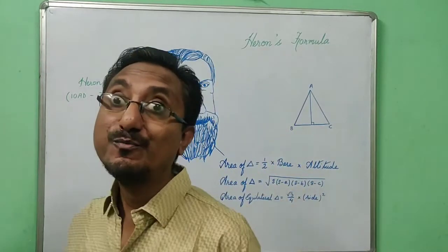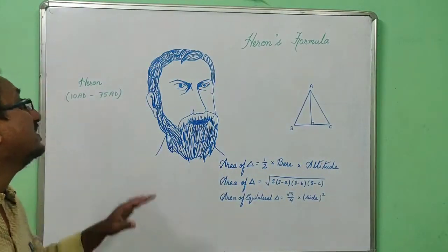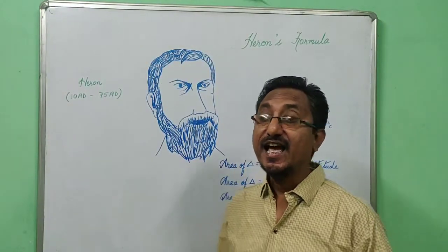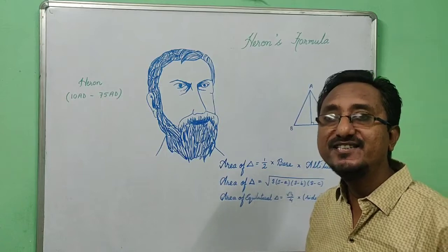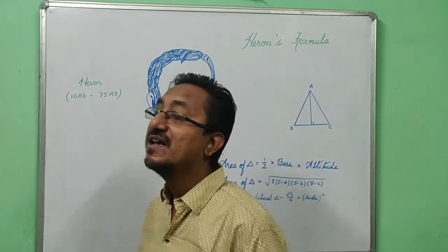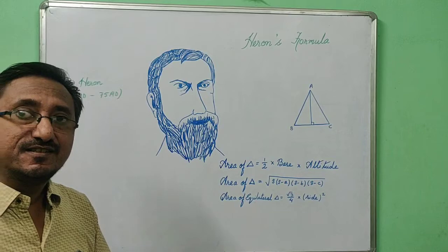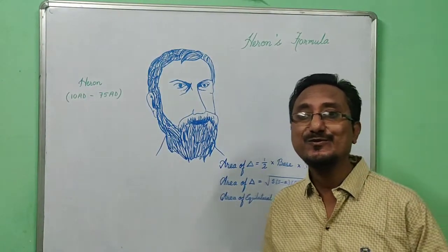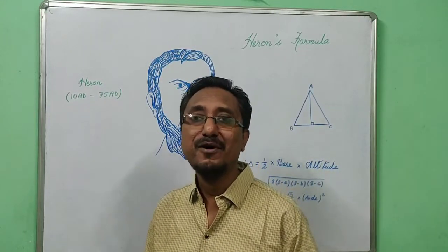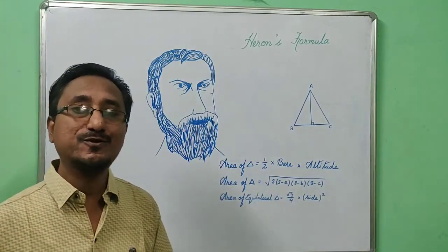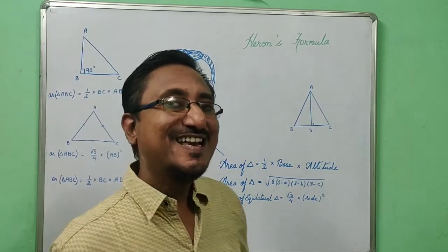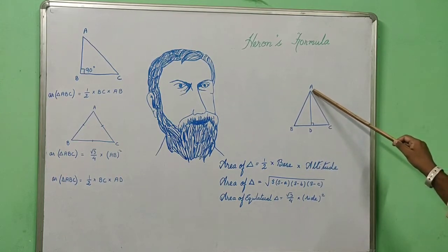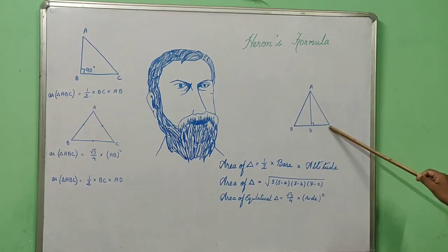Heron's formula was derived by Heron, who worked in applied mathematics. The area of triangle formula derived by Heron is also known as Heron's formula. Let's talk about Heron's formula.